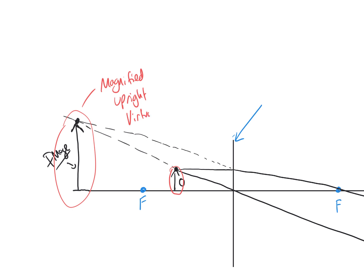We say this one's virtual because the light rays don't actually come from that point. They appear to come from the top of the image. If you ever have to dot back, it's going to be a virtual image.